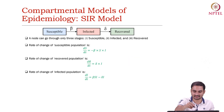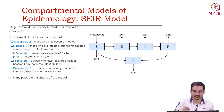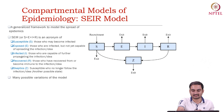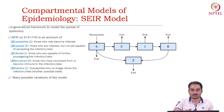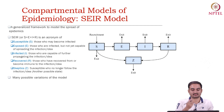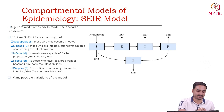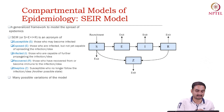This is the broad epidemic model and we generally look at these five states: susceptible, exposed, infected, recovery, and skeptics. Each node would go through one or multiple such states.